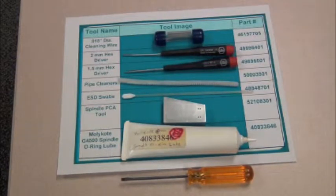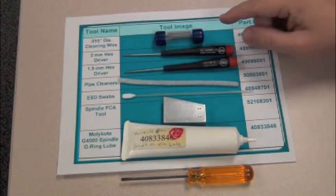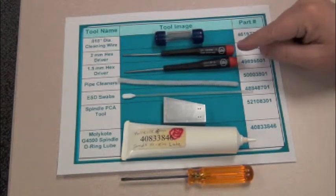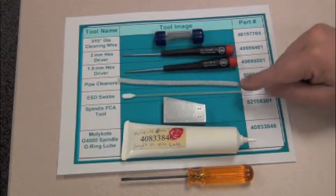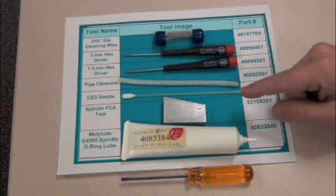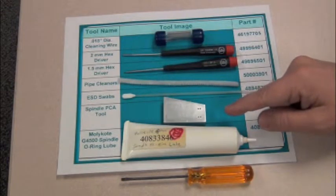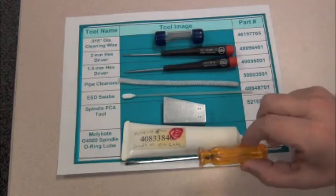These are the tools required for the spindle performance upgrade. You'll need some 18th out diameter cleaning wire, one 2 millimeter hex driver, one 1.5 millimeter hex driver, some pipe cleaners, some ESD swabs, spindle PCA removal tool, Mollecoat G4500 spindle o-ring lube, and a small flathead screwdriver.